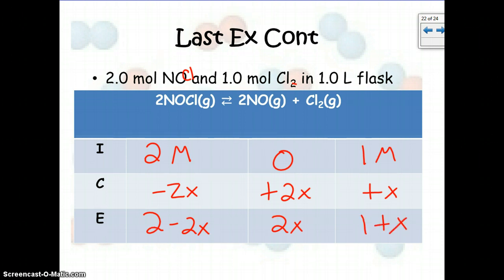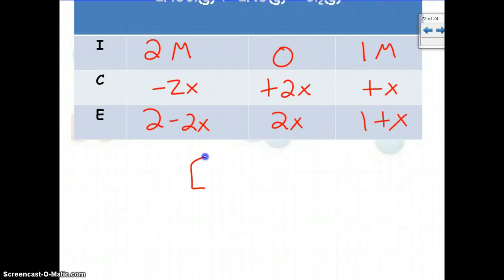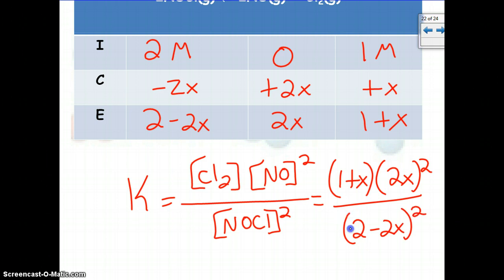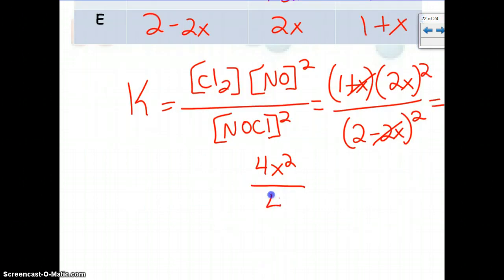All right, so now what we can do is set up our equation, so we got Cl2, we got NO to the second, and we got NOCl to the second, and that's all equal to our K. So we have 1 plus x, and then we have 2x squared, and then on the bottom we have 2 minus 2x squared. All right, so we can cancel our 2x and our x there, because K is so small, so we'd be left with 4x squared on top, and then on bottom we'd be left with 4, so that just reduces us down to x squared is equal to K, and K is 1.6 times 10 to the negative 5th, so that means our x is 0.004, or 4 times 10 to the negative 3rd.